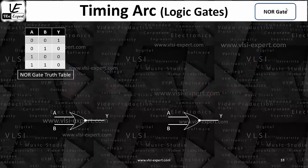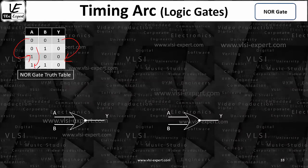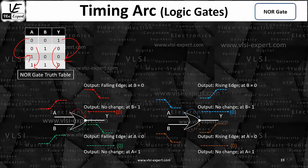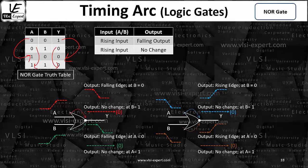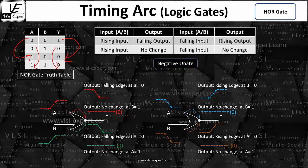Now let's see what happens with the NOR gate on the same lines. If you see the truth table and draw zero to one, it is one to zero; zero to one is zero to zero. On the basis of this you can say it is a negative unit — for rising input you get the falling edge, for falling input you get the rising edge. So to summarize: NOR gate and NAND gate are both negative units; OR gate and AND gate are both positive units; inverter is a negative unit; buffer is a positive unit.